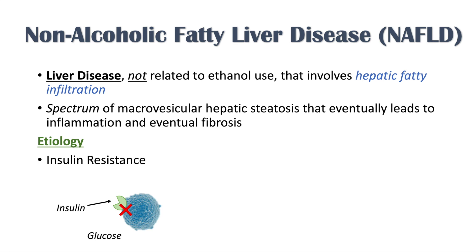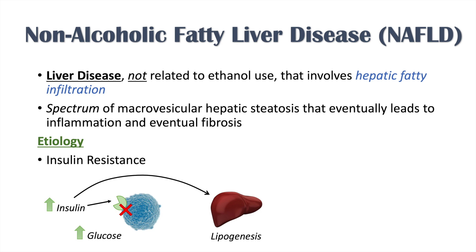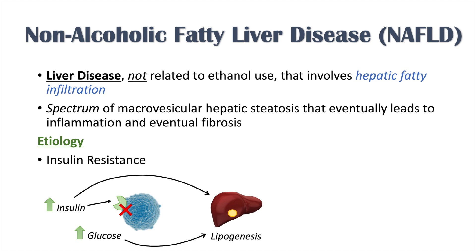When insulin resistance occurs, glucose starts to increase, insulin starts to increase, and we become hyperinsulinemic. This hyperinsulinemic state leads to increased lipogenesis in the liver — the liver takes that higher level of glucose and converts it into fat. Because this is happening at a higher level, the fat-making process becomes aberrant and leads to fatty deposits in the liver. This is how we get this disease.